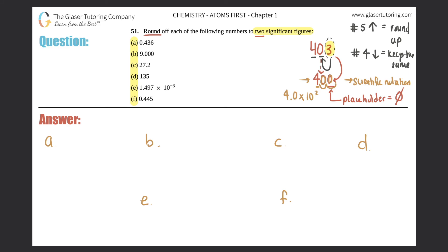So let's see for A, 0.436, we have to round this to two sig figs. So we should know that this zero in the front is a leading zero and leading zeros never count. So the two sig figs that I'm talking about is the four and the three. The next one will always tell you if you round this number up or down.